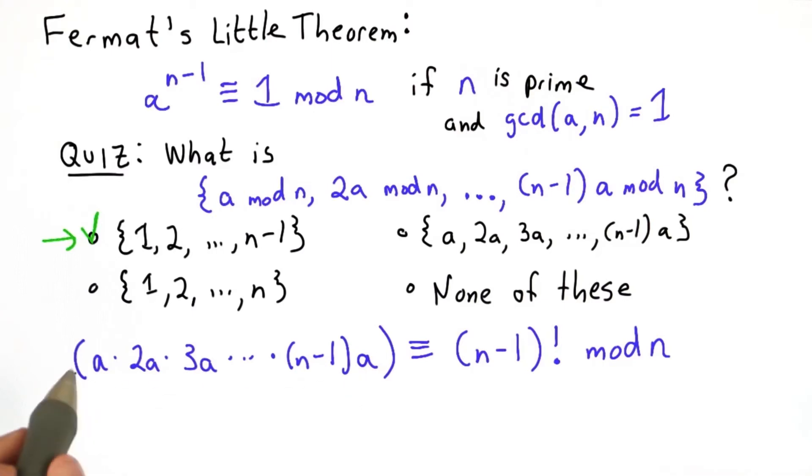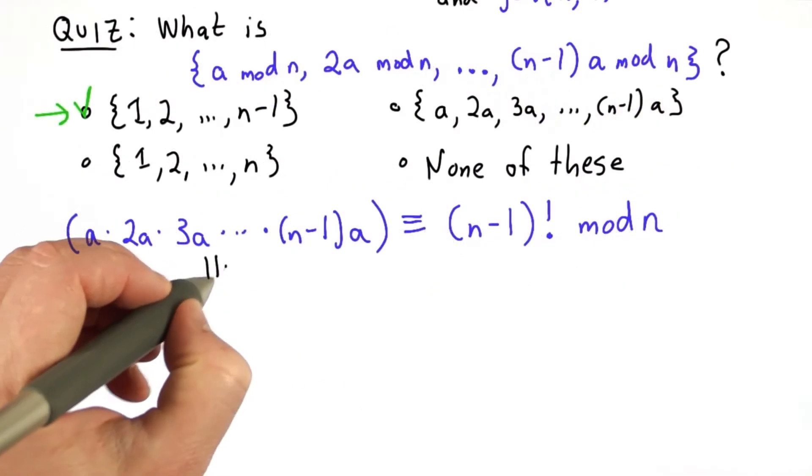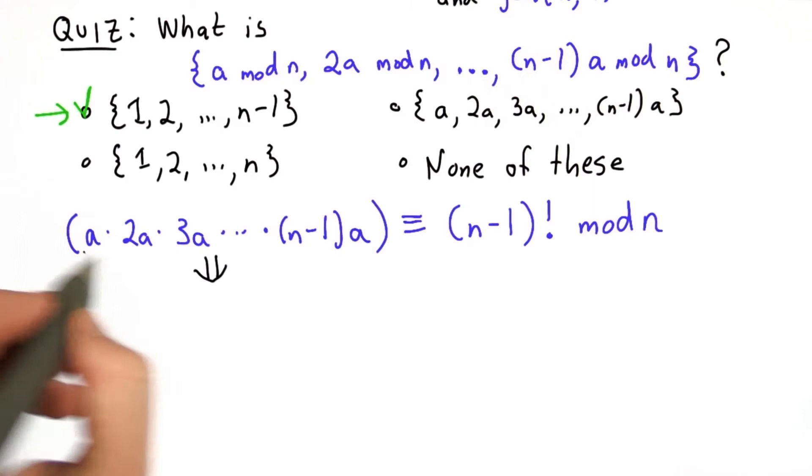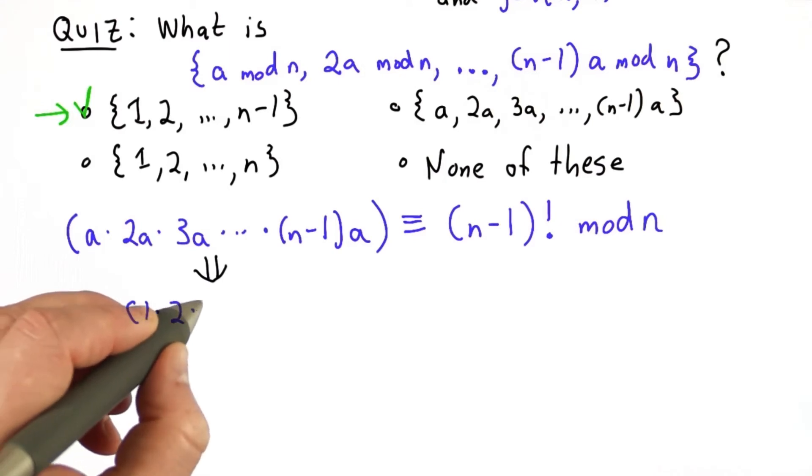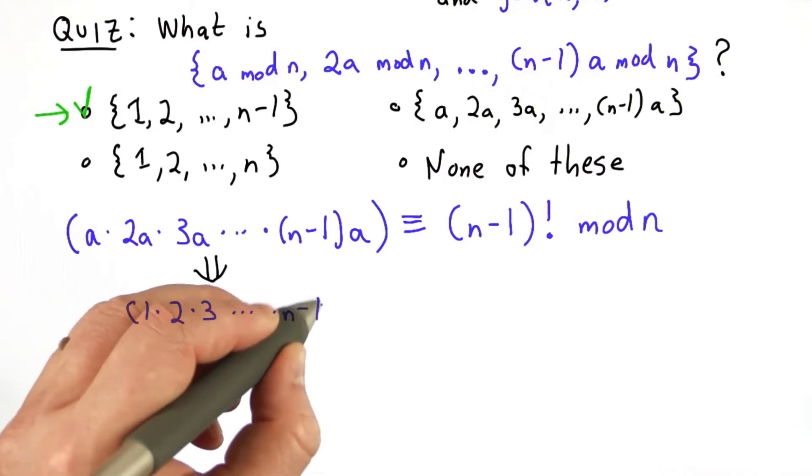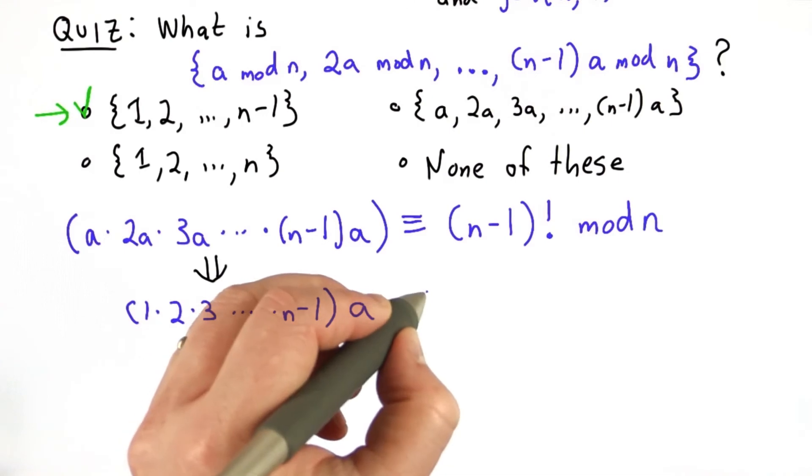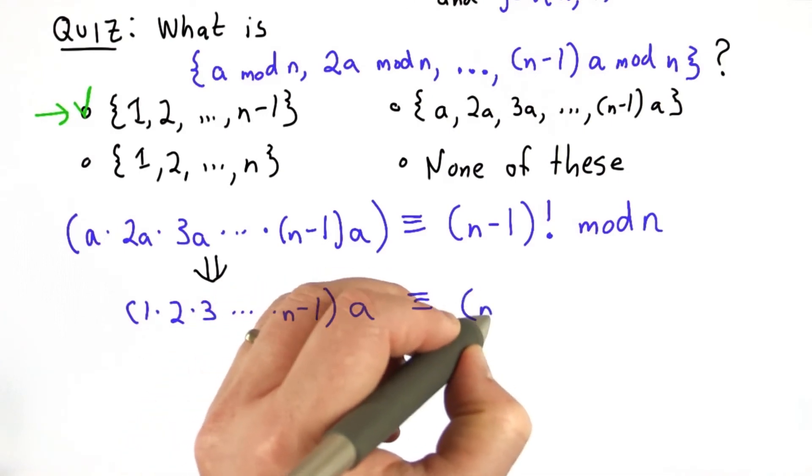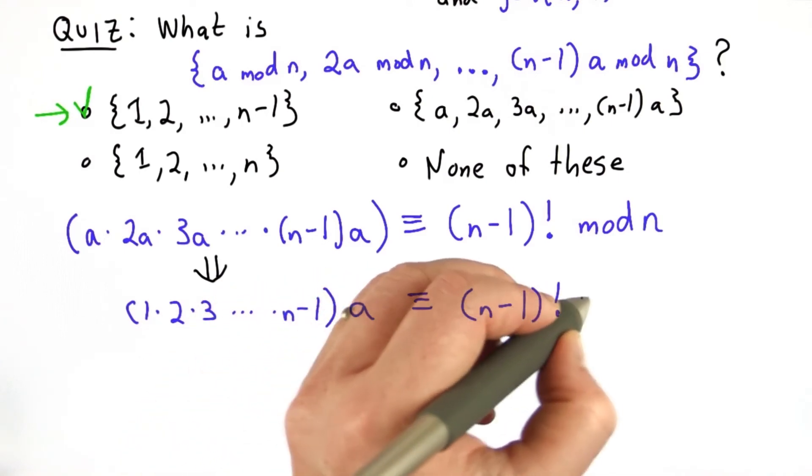We took the mod n out of each of these terms, but that's fine. Then we can simplify this, taking out the a's. And so if we take out all the a's, what we have is 1 times 2 times 3 dot dot dot times n minus 1 times a, still equal to n minus 1 factorial mod n.